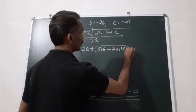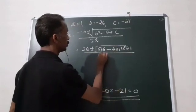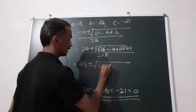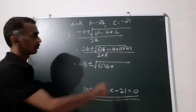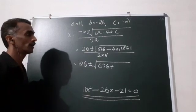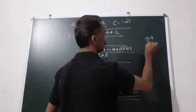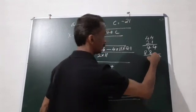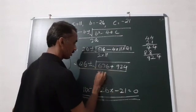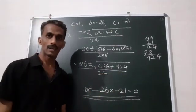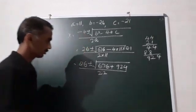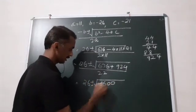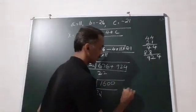So x equals 26 plus or minus root of 26 squared minus 4 into 11 into minus 21, divided by 2 into 11. That is 26 plus or minus root of 676 plus 924, divided by 22. Which equals 26 plus or minus root of 1600 divided by 22.